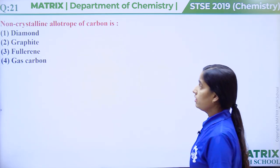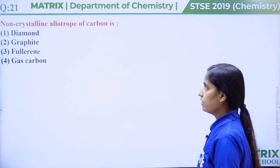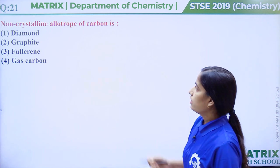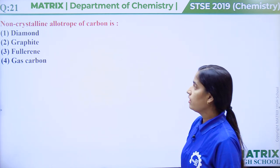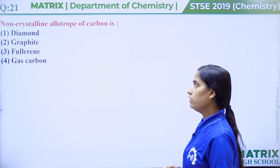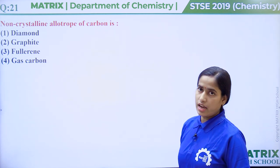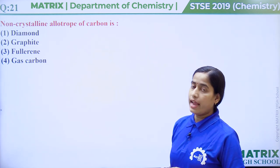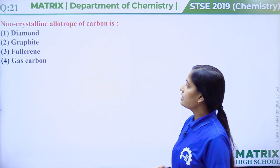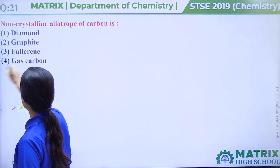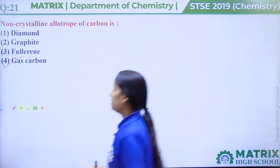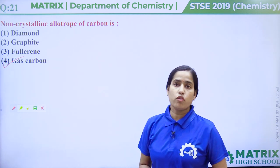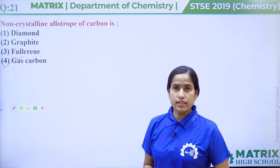Question number 21: Non-crystalline allotrope of carbon is. Non-crystalline means not having a regular structure. Diamond has a regular structure, graphite also has a regular structure, and fullerene is a crystalline allotrope. But option number 4, gas carbon, is the amorphous and non-crystalline form of carbon. It is formed by destructive distillation of coal and does not have a regular structure. So the correct answer is option number 4.